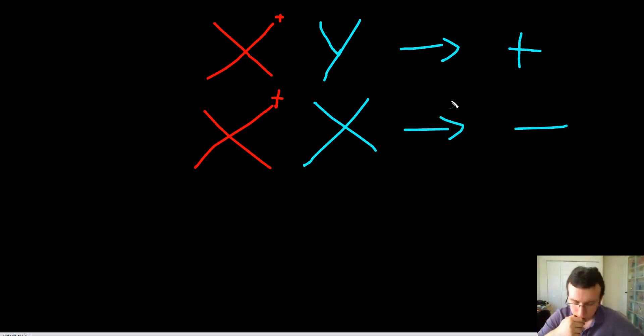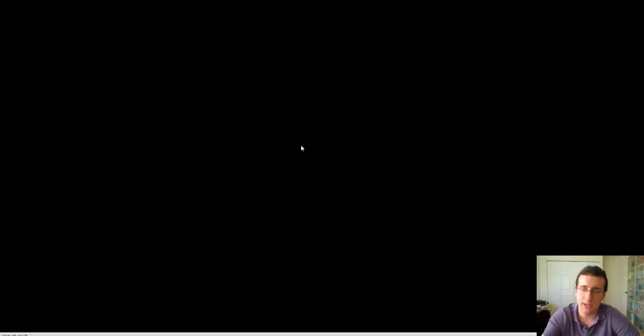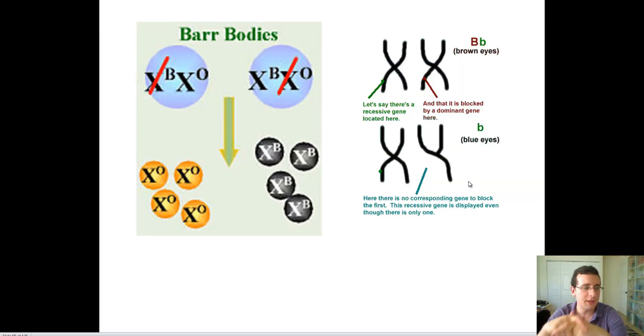What gets tricky with humans and a lot of other animals is that there's actually something else that tends to happen to females. You only ever need one X chromosome — and the proof of that, of course, is males. Males have one X chromosome and they're fine; you don't need two X chromosomes to survive. So in females, something interesting happens called X chromosome deactivation.